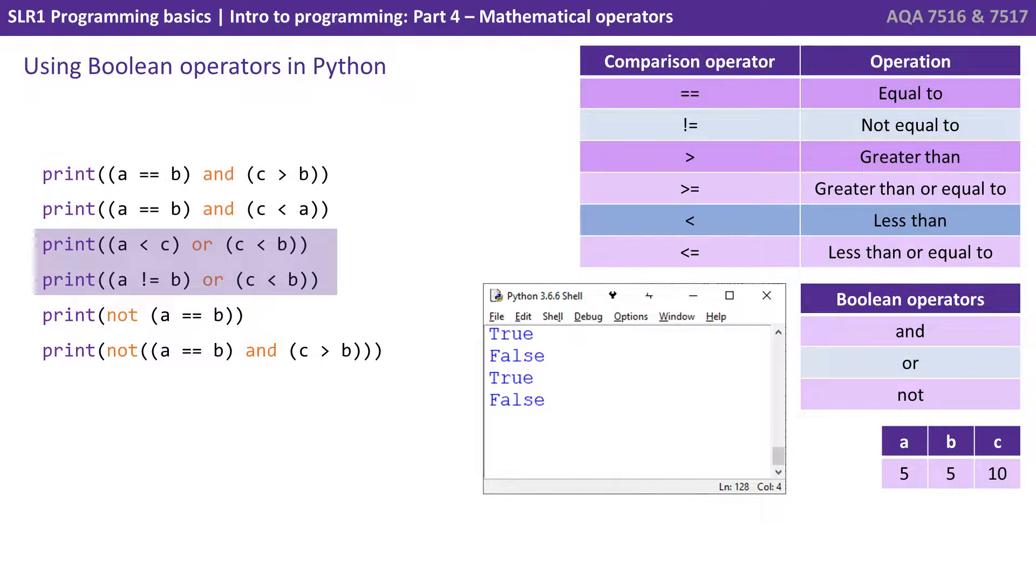So these next two, the first one should be true and the second one should be false. And then NOT A equals B should be false. NOT reverses the result of A equals B. So although A equals B is true, NOT true equals false. And the last one, if we work it through logically, is false. Because A equals B is true. C is greater than B, well C is, that's true. So we have true AND true, which is now true. And then finally we say NOT true, which reverses it and makes it false.